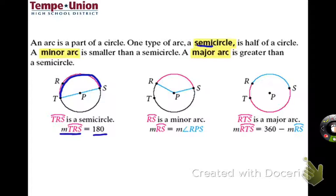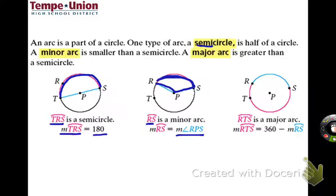For a minor arc, we typically use just two letters. You can see minor arc RS right here. What's interesting is that the measure of the minor arc is equal to the measure of the central angle created here. It's called a central angle because the vertex of the angle is right at the center of the circle. The arc measure and the angle measure are equal to each other.